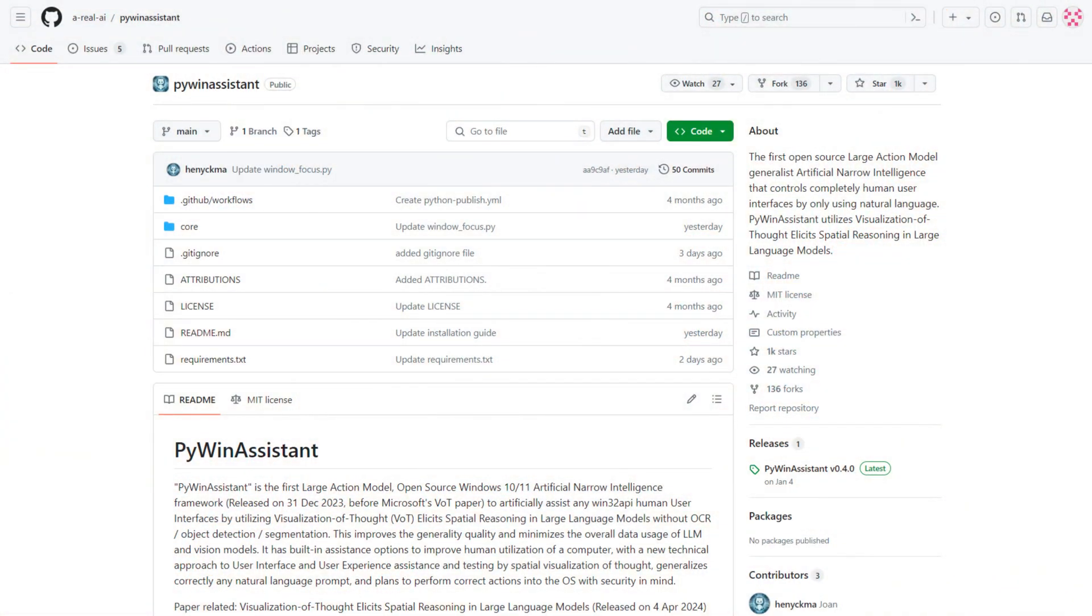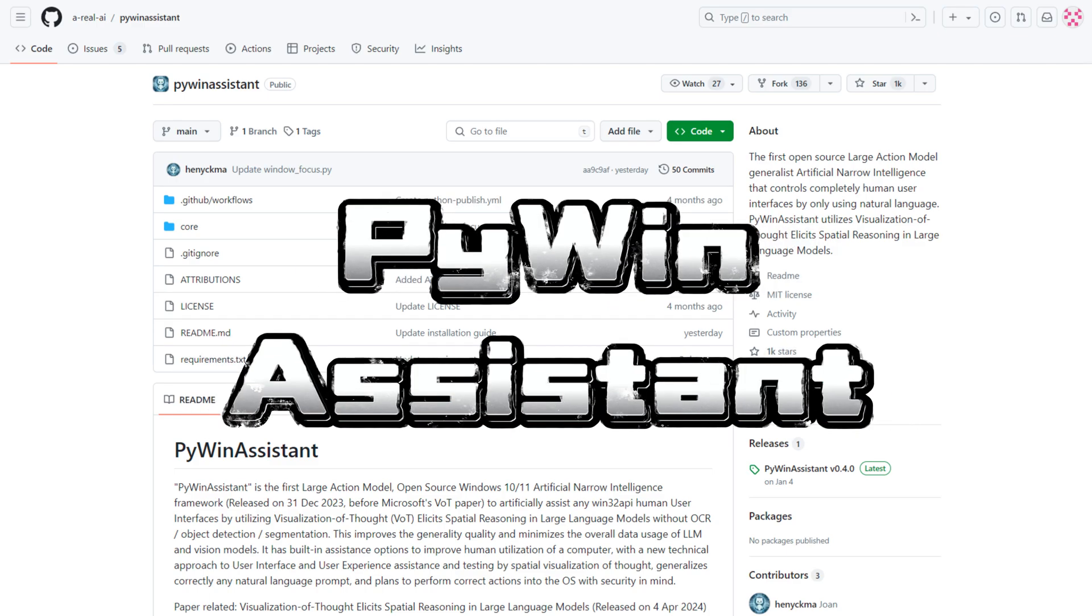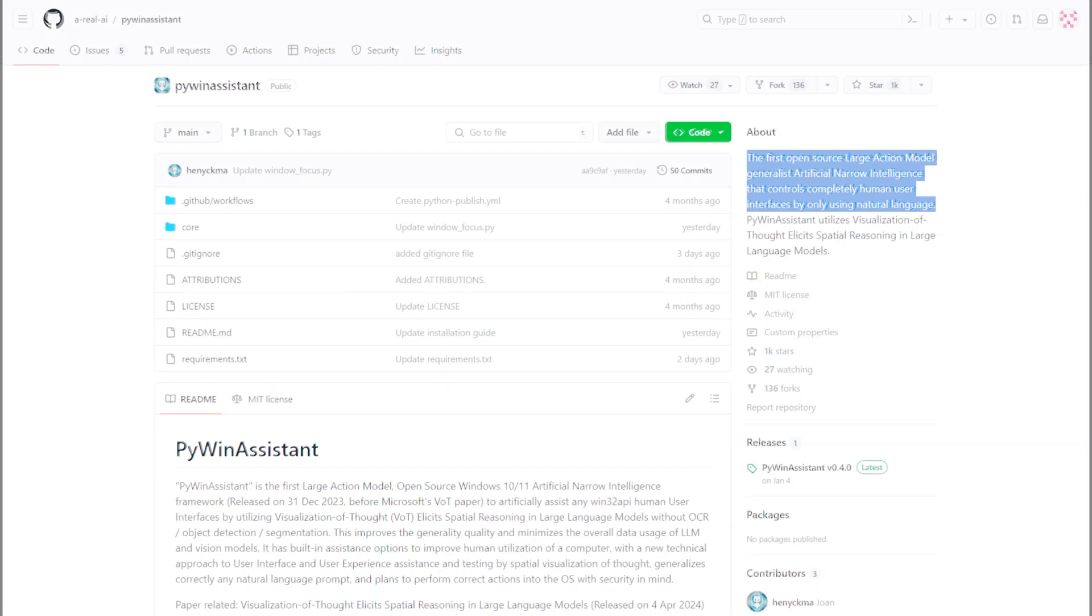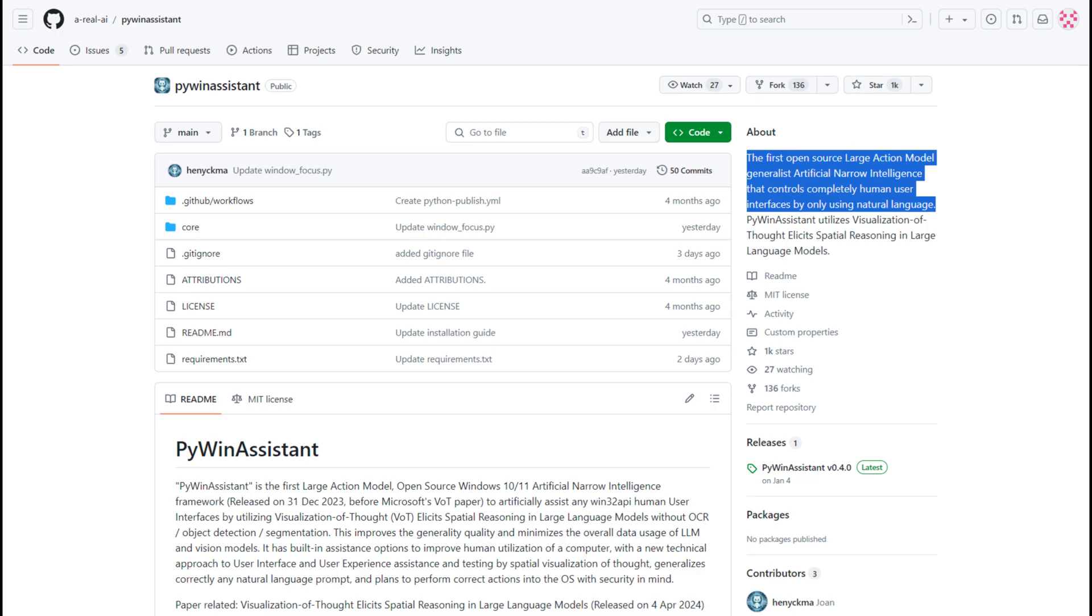Today, we are introducing a large-scale open-source action model with a fully open-source variant specifically for Windows released by Microsoft. Here's the project introduction. It's named PyWinAssistant, and it is characterized as the first open-source large action model generalist artificial narrow intelligence that controls completely human user interfaces by only using natural language.